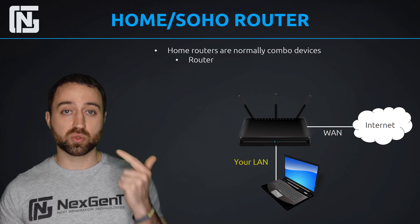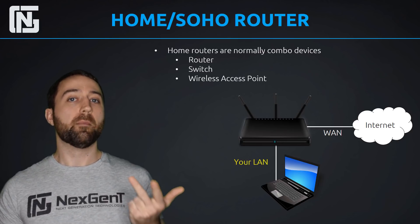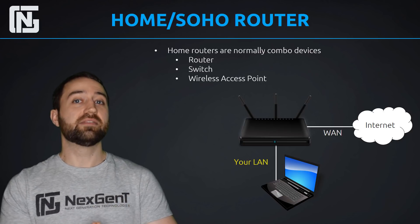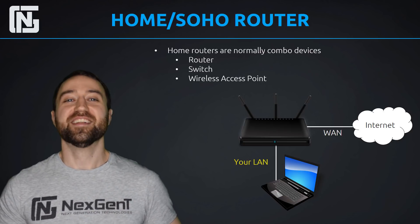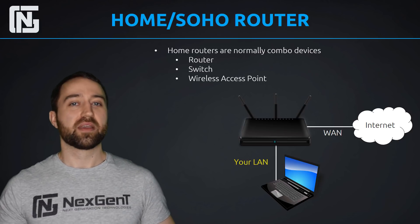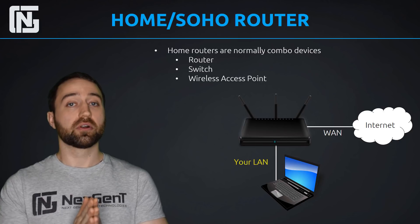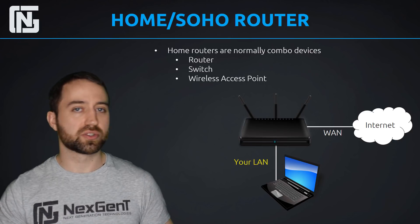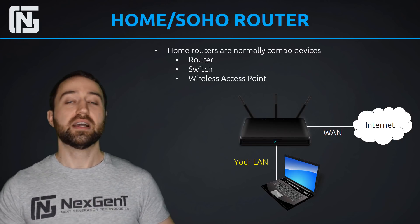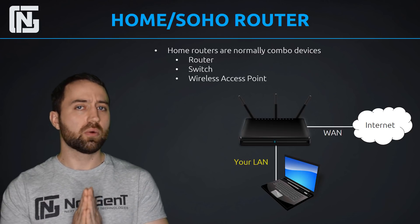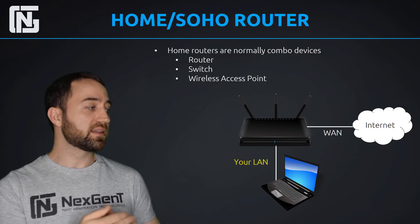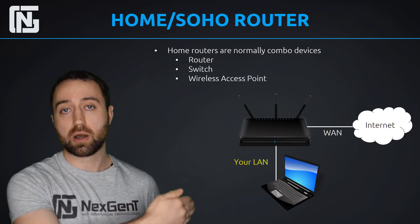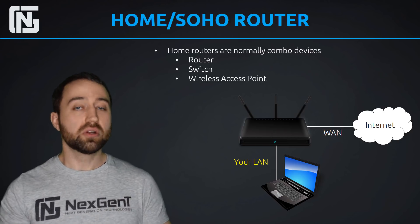Your home router is a router, a switch, and a wireless access point all in one. Sometimes people might have a solo router, solo switch, and solo wireless access point separately — they're probably networking enthusiasts. Normally when you buy a router at a store for your house, it's going to be a combo device. It is also a router and it does firewalling services. Most routers allow you to do some type of firewalling because they connect to the internet — and the internet is the wild, wild west — so we want to protect that connection with security features.